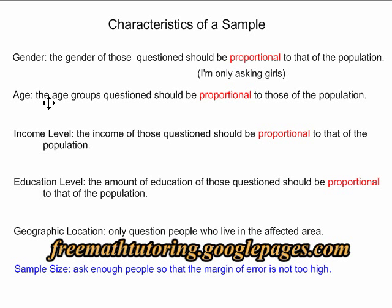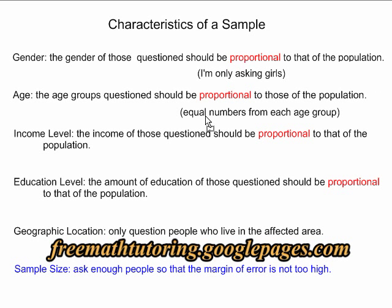Next we'll look at age. The age groups questioned should be proportional to those of the population. Most of the people in the school are teenagers, but although that is a narrow age group, there are different ages within it. We might have people from 12 to 18 years old. So what we'll do is try to ask equal numbers from each age group.